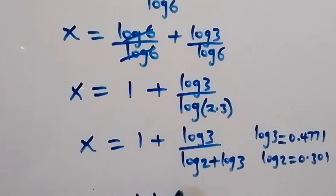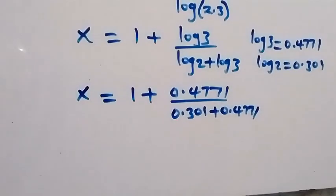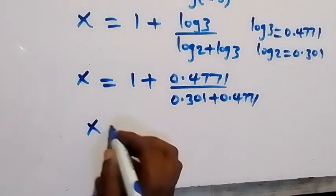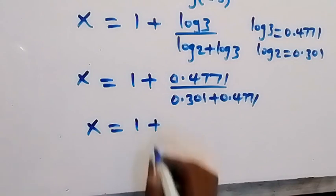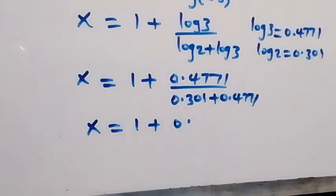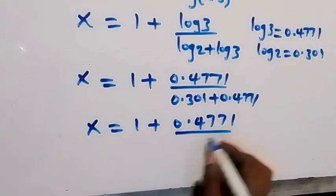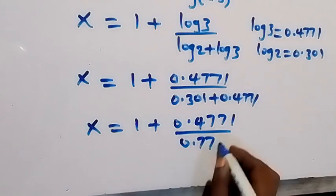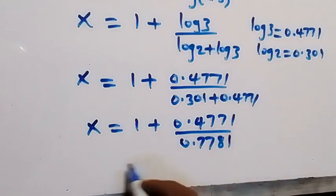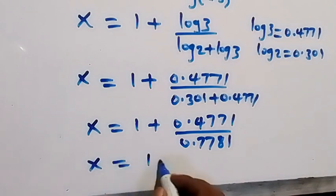Then divided by log 2, log 3 equals to 0.301 plus 0.4771. And then from here we have x equals to 0.301 plus 0.4771. And then from here this gives us x equals to 1 plus 0.4771.